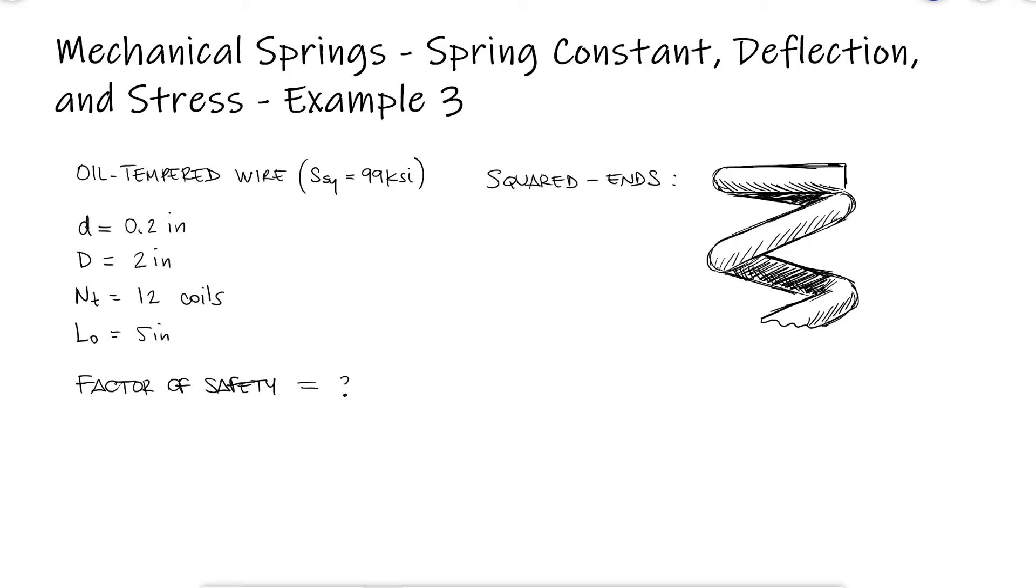The factor of safety against yielding will be the shearing yield strength over the shearing stress. The S subscript I'm using is for solid length, since we're considering the worst case scenario when the spring is compressed to closure.